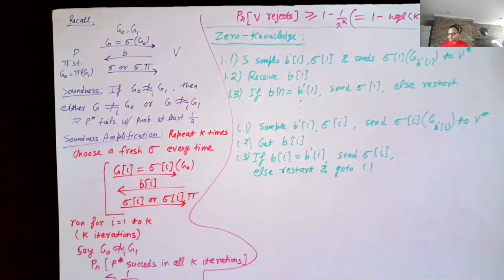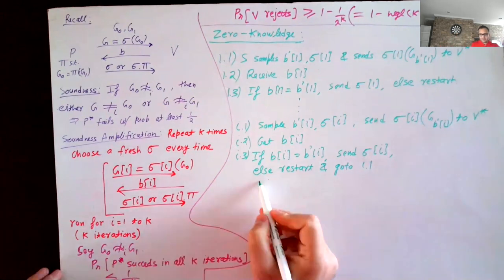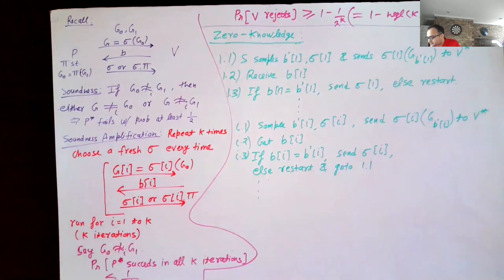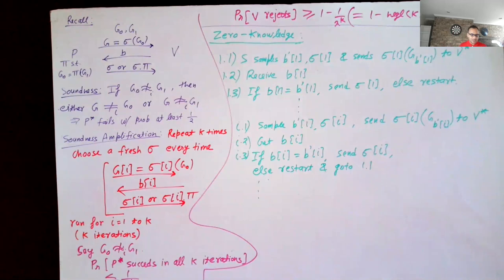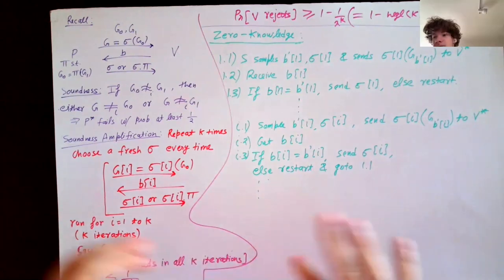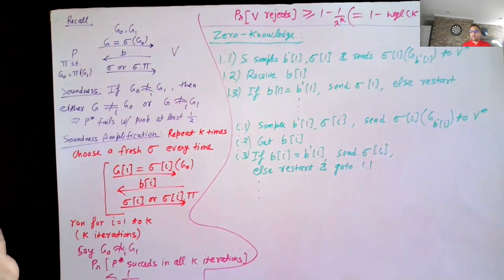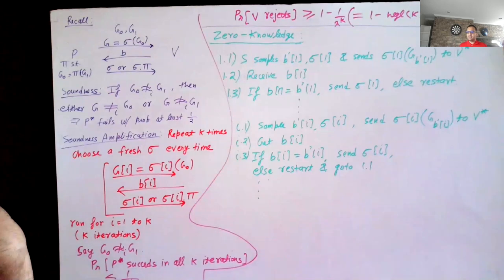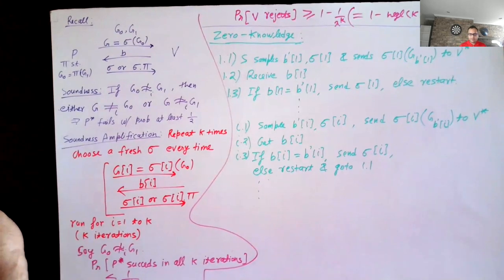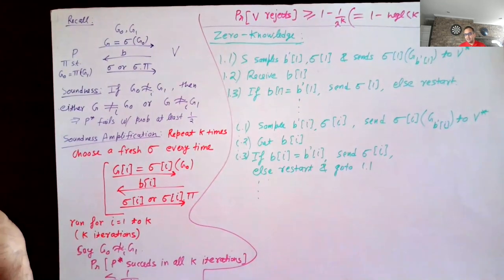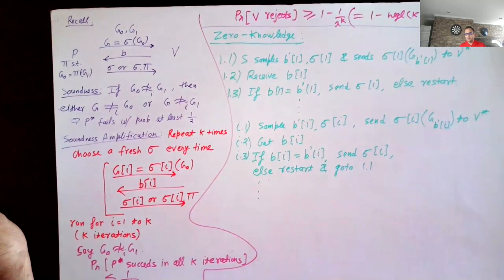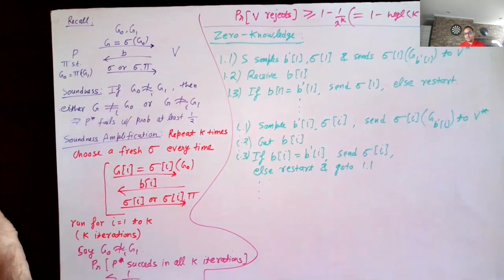The problem with restarting all the way to step 1.1 is that the runtime becomes exponential. In every iteration the simulator fails with probability one-half, so the probability that the simulator reaches the end of all k iterations is (1/2)^k. The number of trials needed is 2^k, which is exponential in k — that's not what we want.